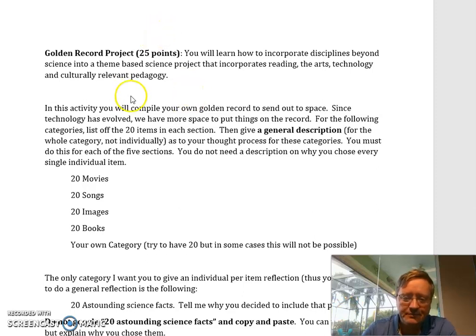What would your assignment be? So you can see here, what I want you to do is you're going to come up with several different items in each section. So for movies, what are the 20 movies you think should go on to the Golden Record?